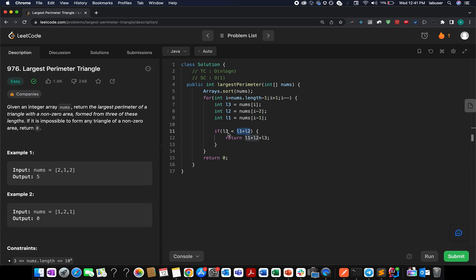And then we apply the same formula that I talked in the presentation: L1 plus L2 is greater than L3. If that is the case, we abort the process there and then itself and we return L1 plus L2 plus L3.